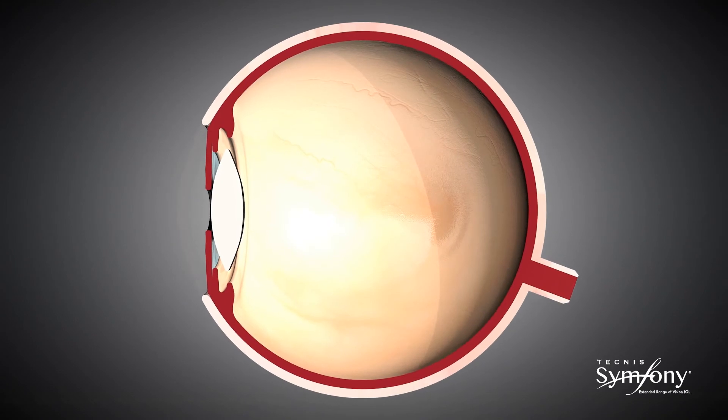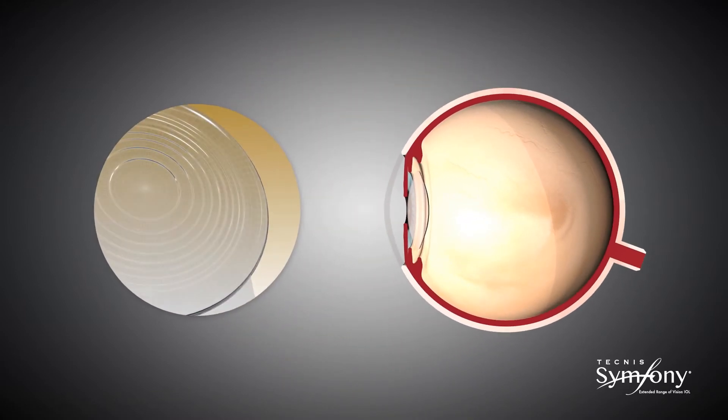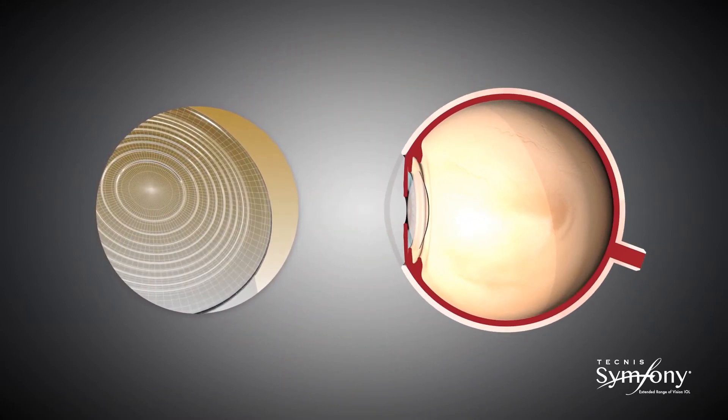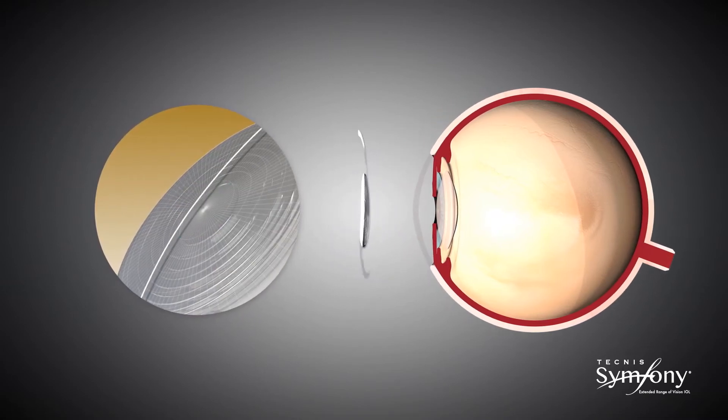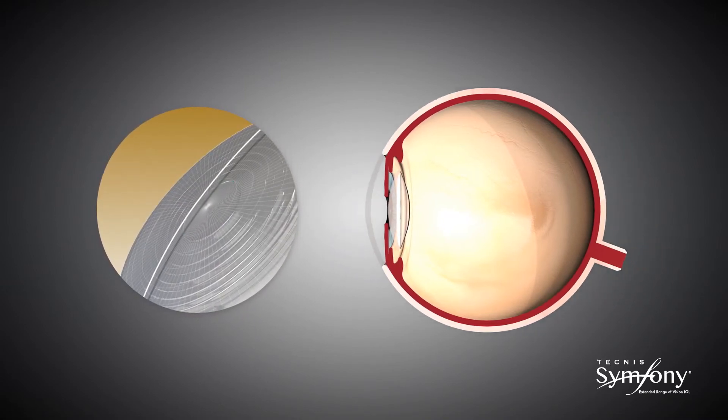Tecnis Symphony IOL delivers on this promise by utilizing two proprietary complementary enabling technologies, which are the echelette design that extends the depth of focus and the achromatic technology which corrects chromatic aberration.